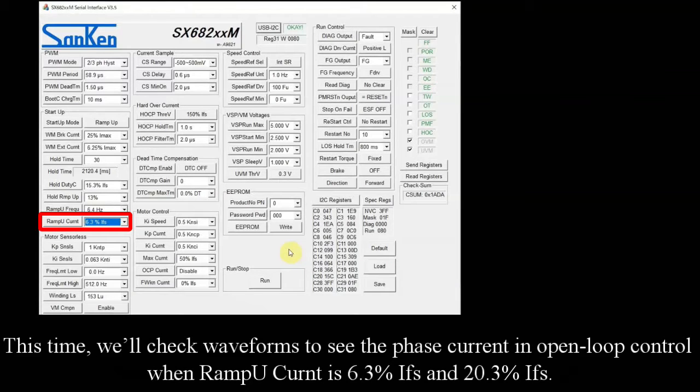This time, we'll check waveforms to see the phase current in open loop control when ramp up current is 6.3% IFS and 20.3% IFS.